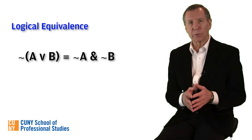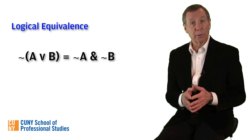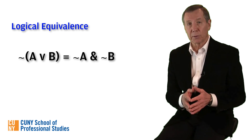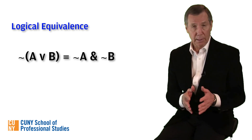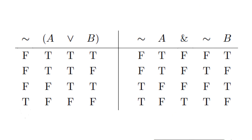By constructing a truth table in which the two expressions display identical truth values beneath their main connectives. Let's do that now. We abbreviated the truth table by omitting the reference column, since we can input those values beneath the two atomic sentences, A and B.